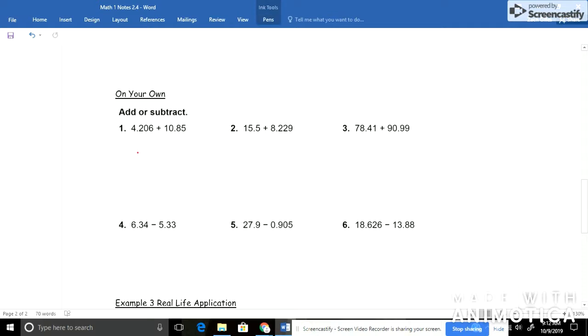Hopefully you got, for number 1, 15.056. Number 2 is 23.729. Number 3, 169.4. Number 4 is 1.01. Number 5 is 26.995. And lastly, we've got 4.746.